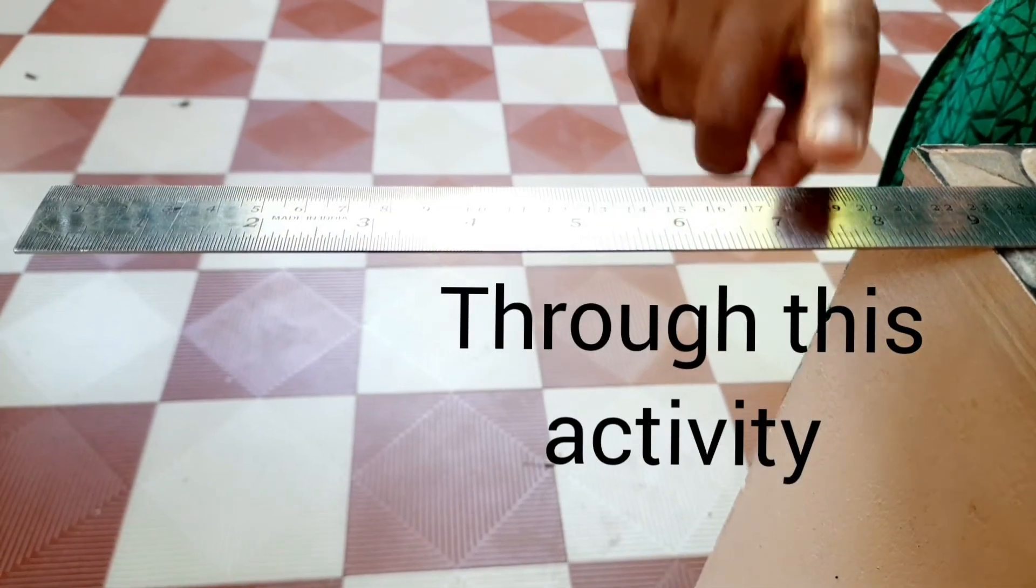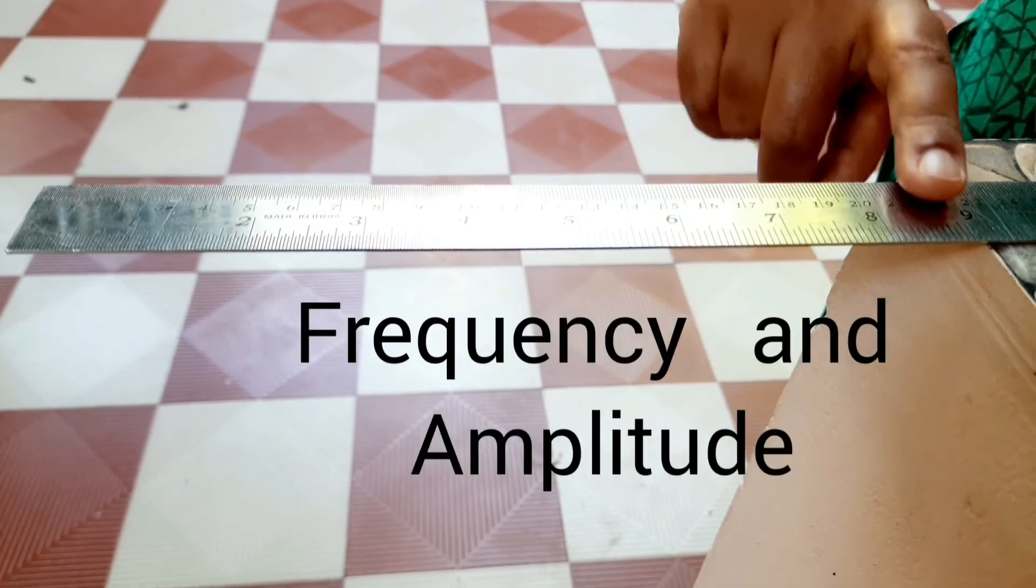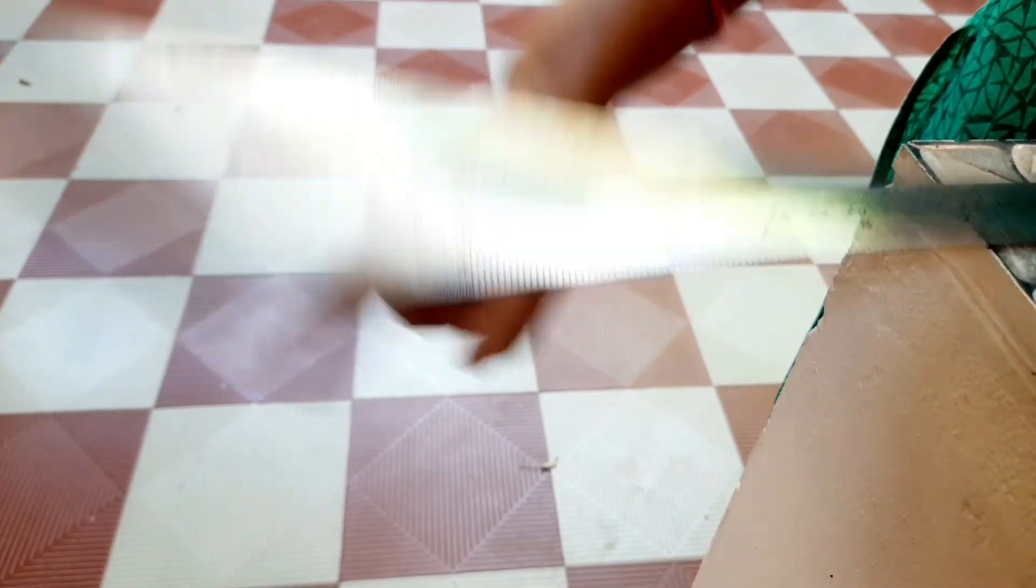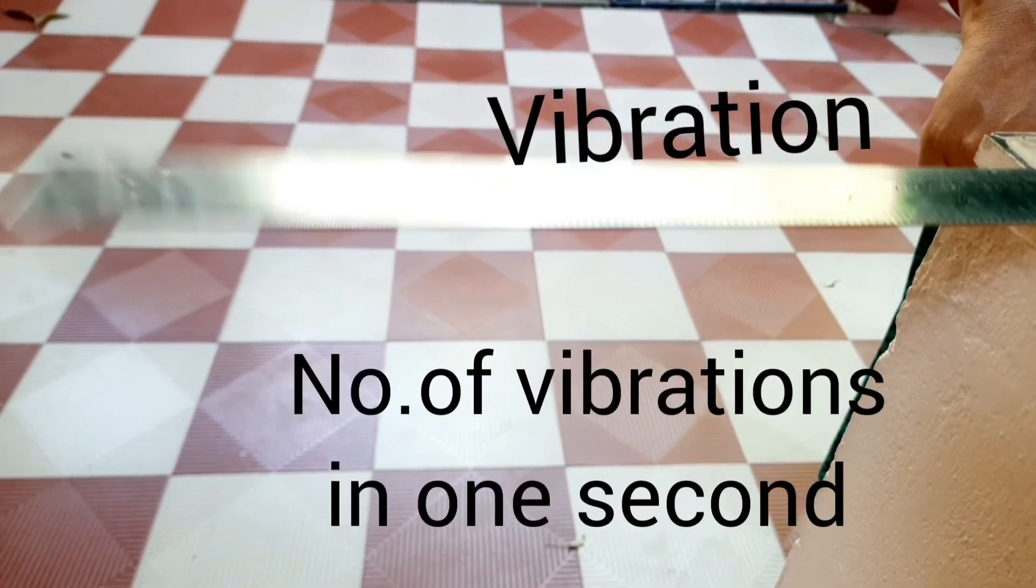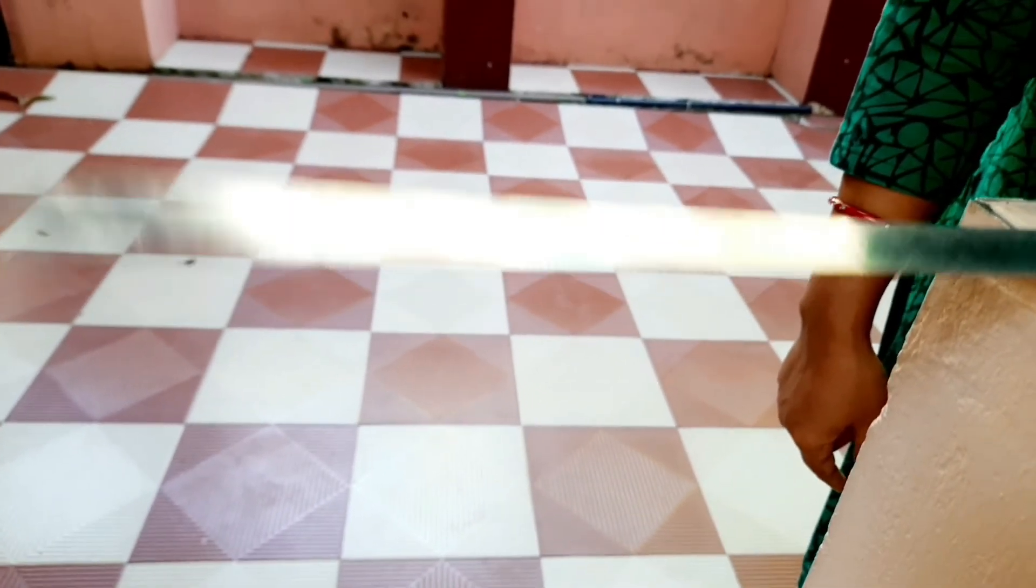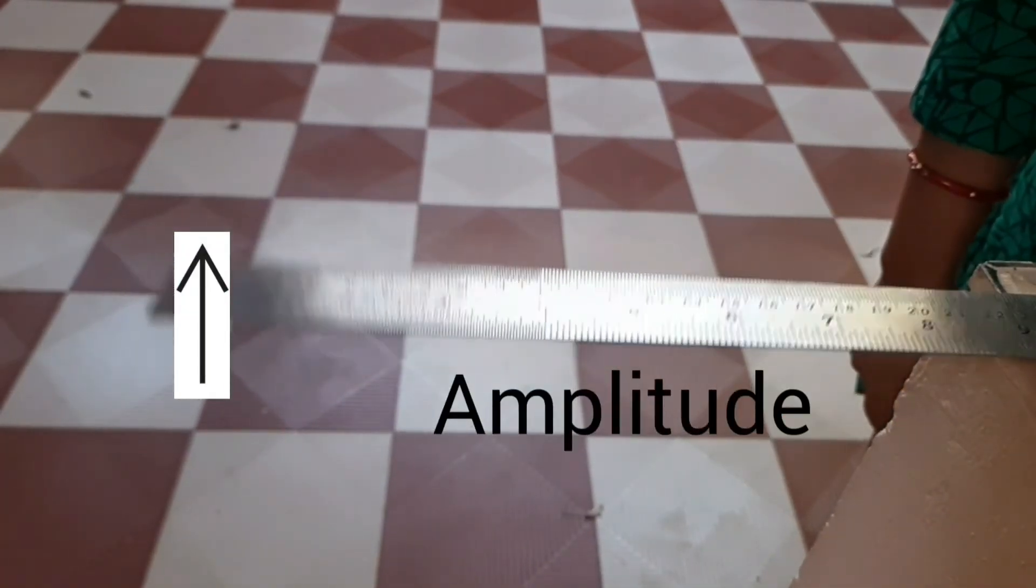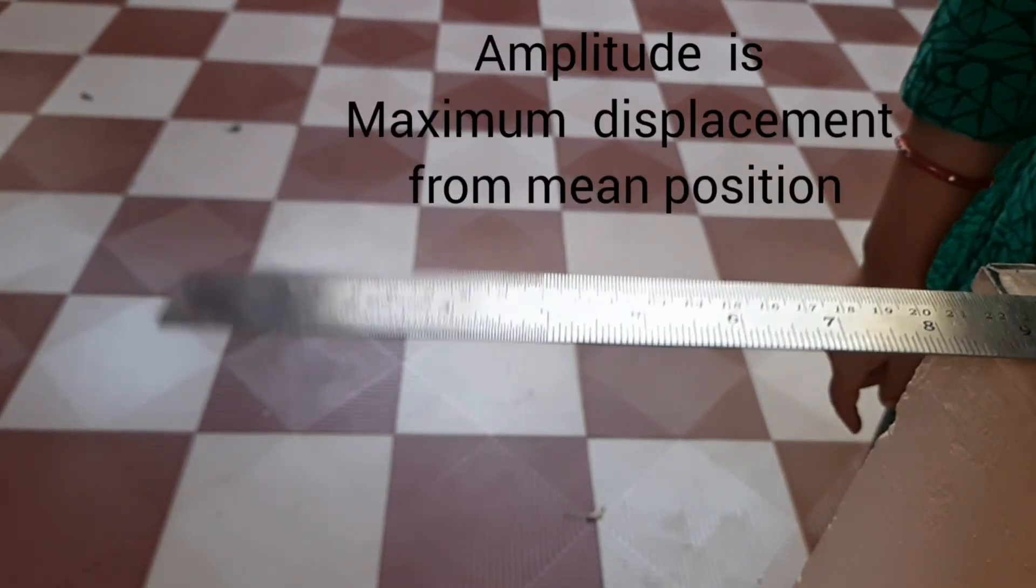Through this activity, we will understand about frequency and amplitude. Take a scale, pull it down and release it. This movement of scale is known as vibration. And number of vibrations in 1 second is known as frequency.